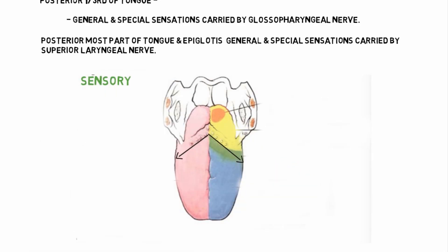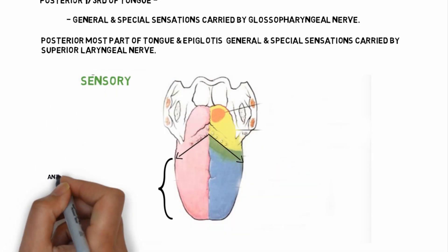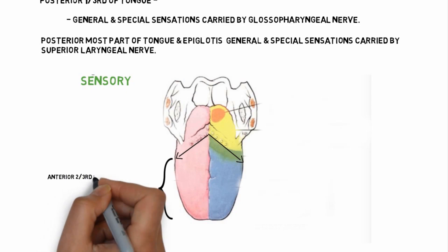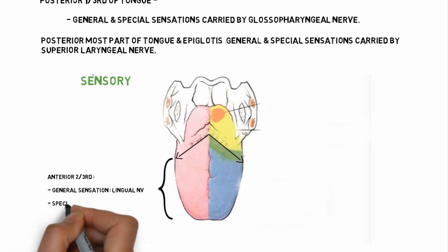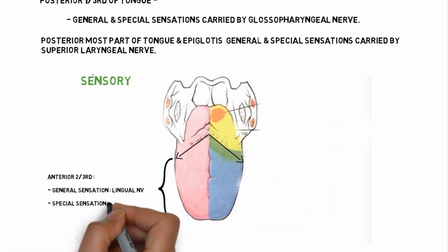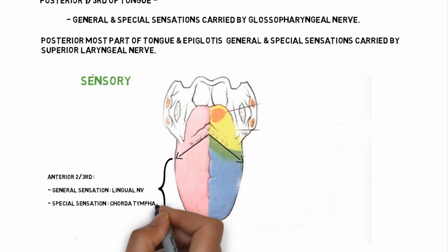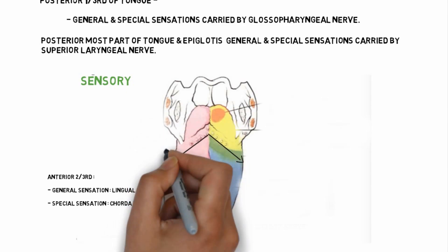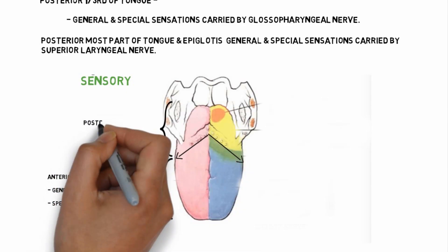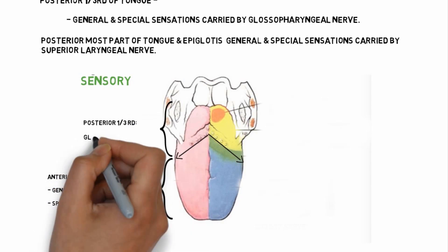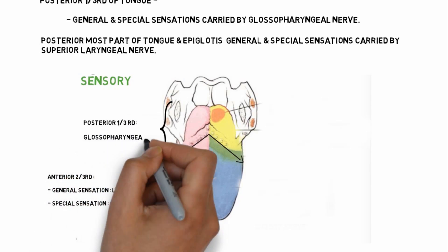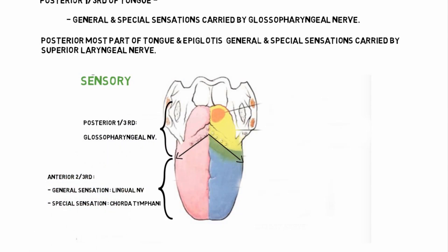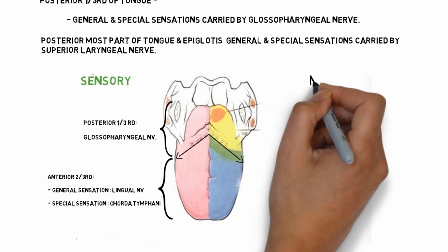The anterior and posterior parts of the tongue are divided by the sulcus terminalis. Anterior two-thirds general sensation is carried by the lingual nerve, and special sensation by the chorda tympani. Posterior one-third general and special sensations are carried by the glossopharyngeal nerve.